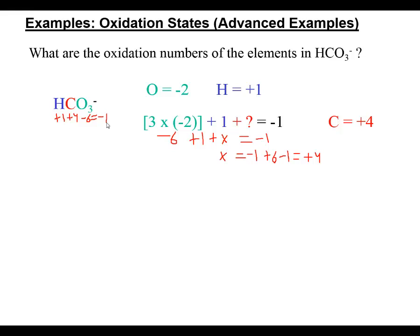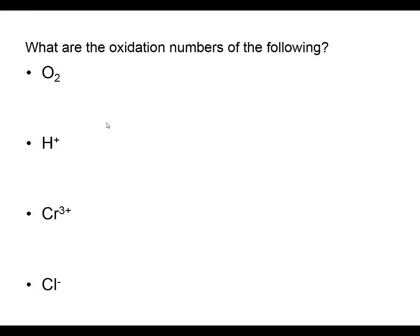So far you're becoming masters at determining oxidation numbers - it's a really useful tool when we start looking at redox reactions in greater detail. Let's look at a few more practice examples. For elemental oxygen, even though it's diatomic, the oxidation number is just a zero.